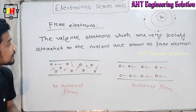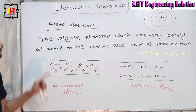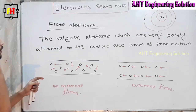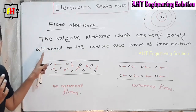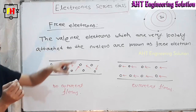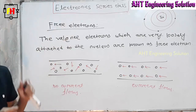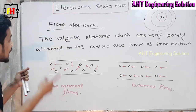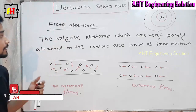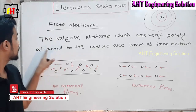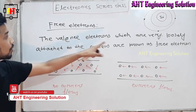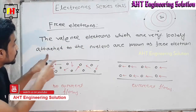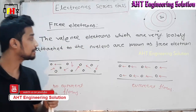The valence electron which is very loosely bound — that is the balance electron that is very loosely defined. The balance electron under practice, protection, collection, formation, and conference.